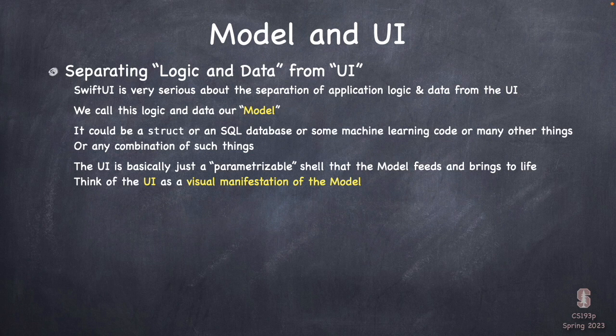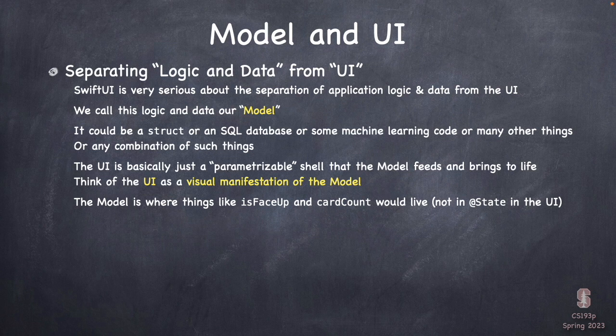The UI part of our app is really just a parameterizable shell that the model feeds. One of the best phrases I've heard for the UI is it's a visual manifestation of the model, because the model is what your app is — it's a Memorize game. For what we've done so far, isFaceUp and card count — things we've been putting in @State — they belong in the model. Those are all things about the game. So in the UI we'll be getting rid of them and putting them into our model.